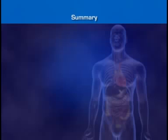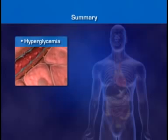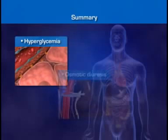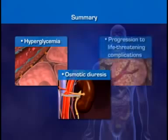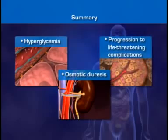Diabetes mellitus is a disorder of blood glucose control involving an absolute or relative deficiency of insulin, or disrupted insulin reception, leading to hyperglycemia, osmotic diuresis, and progression to life-threatening complications.